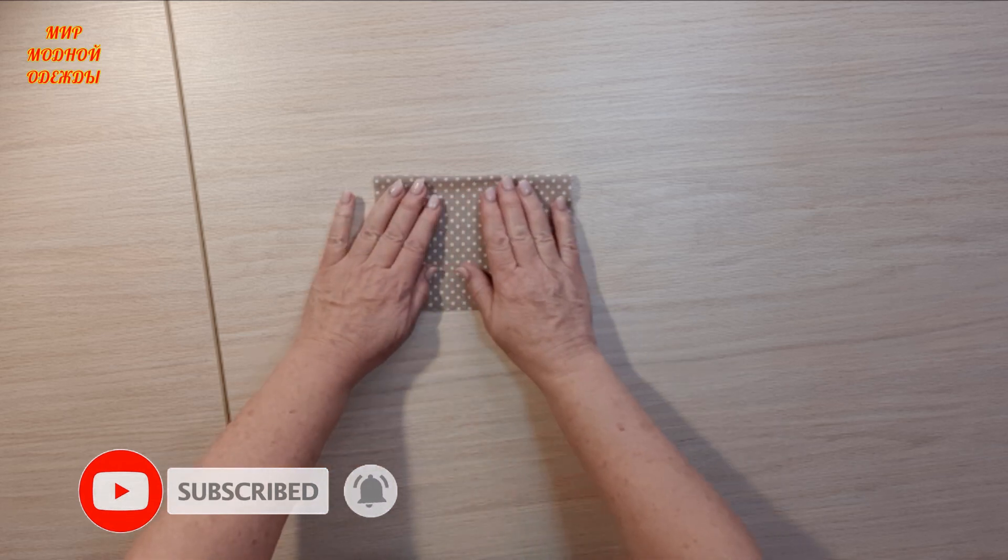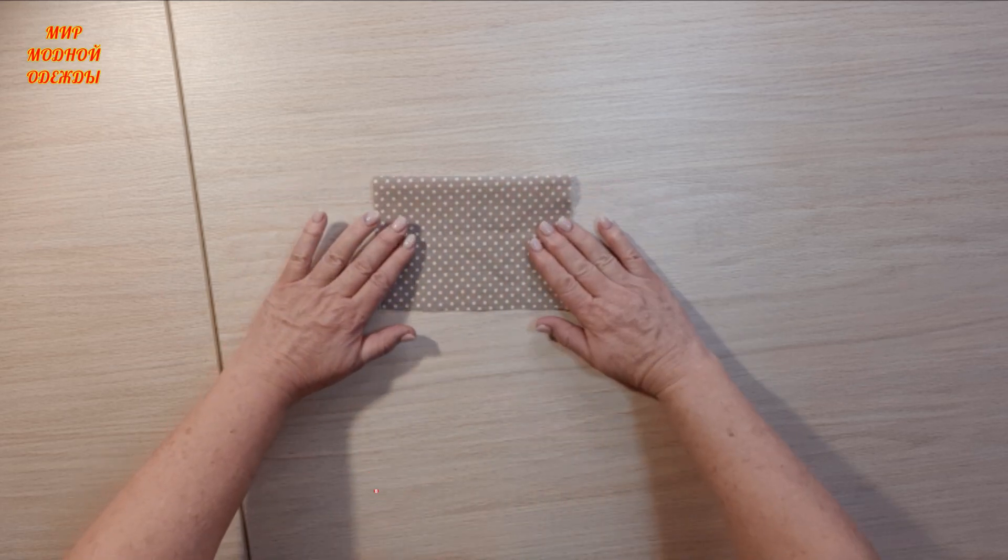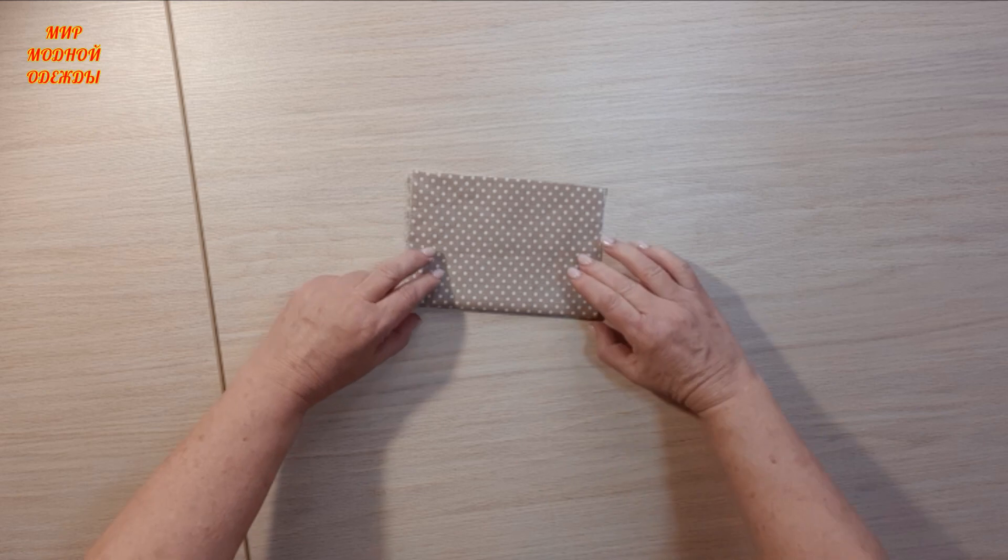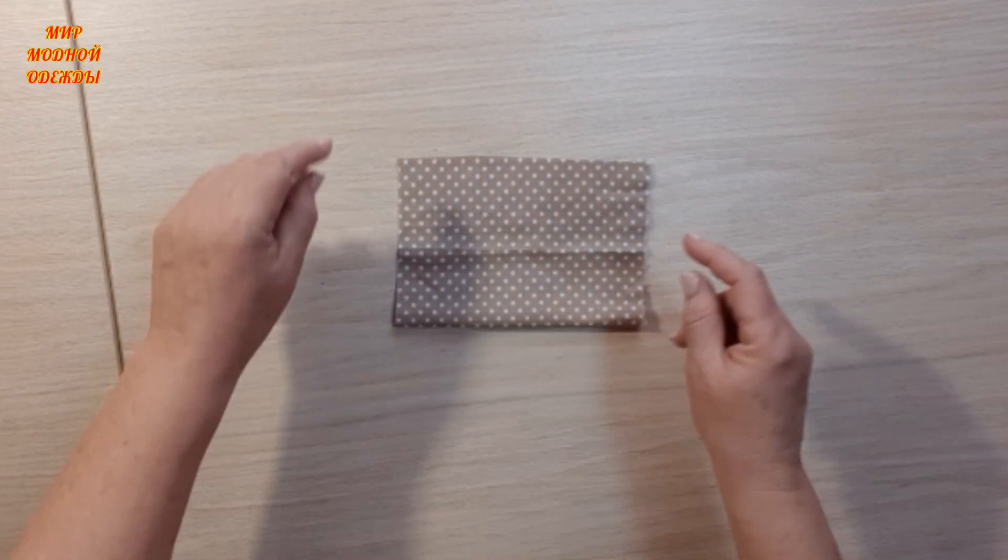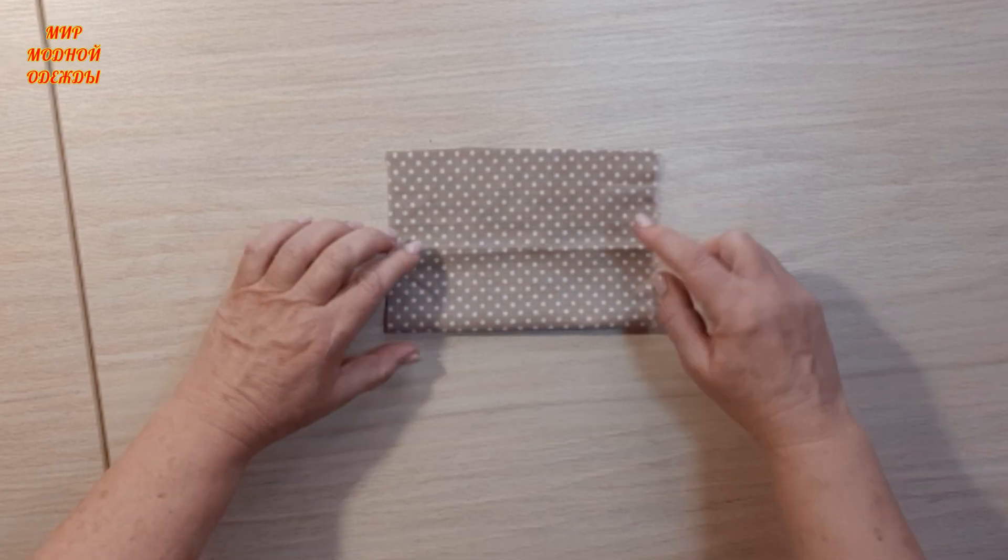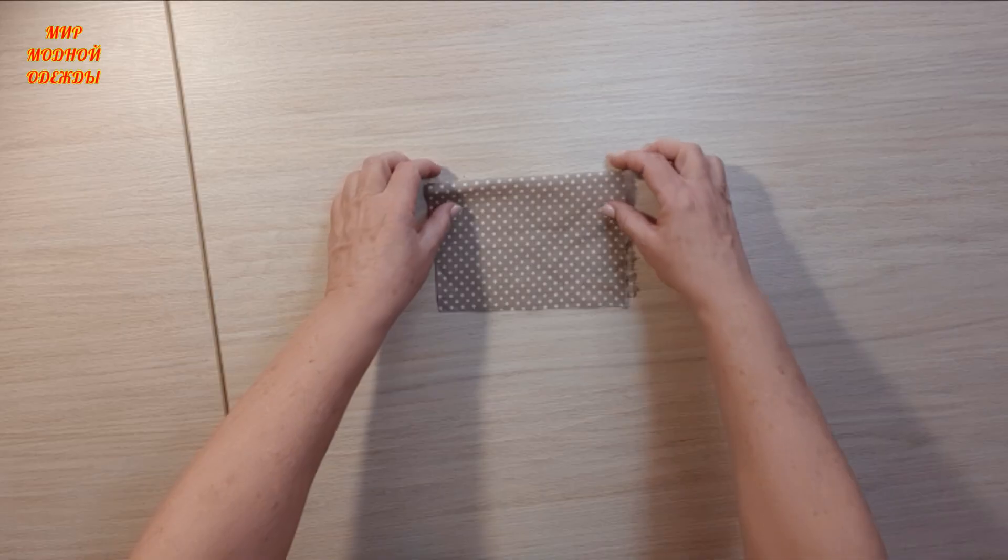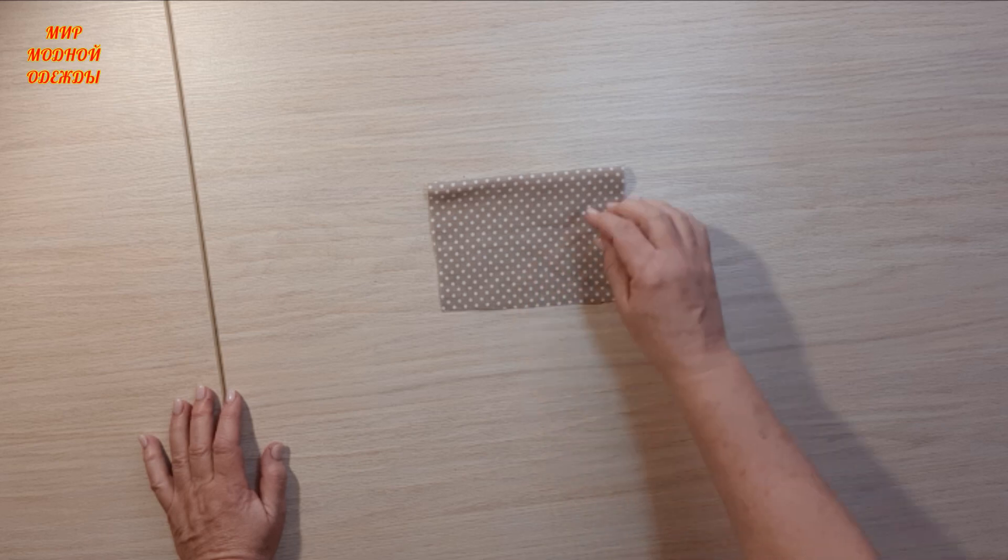Why? Because we can lay it this way, can lay it this way, can lay it this way and like this. If we make it at the bottom, then either this way or this way. Therefore this is a more variable method.